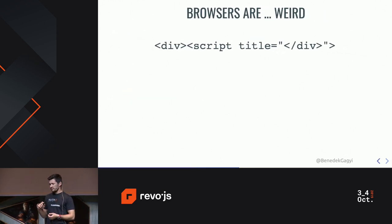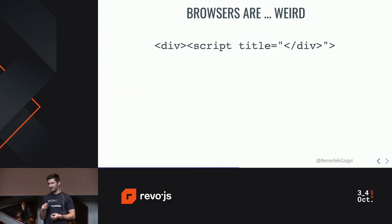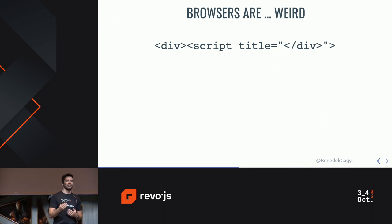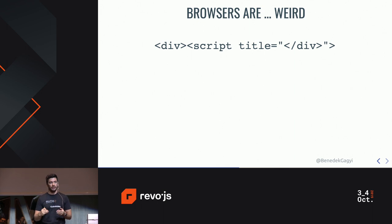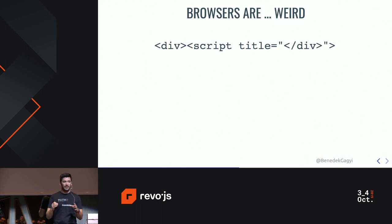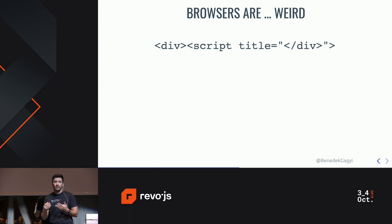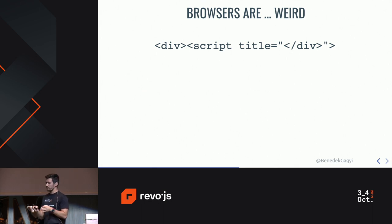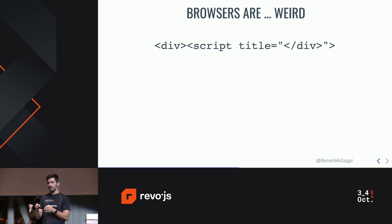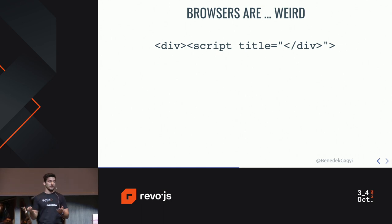The problem is that browsers are pretty weird — super weird. It's really hard to tell, if you just look at a piece of HTML code, what the browser will actually render. For example, we have some invalid HTML. Browsers will, even if you send them something invalid, try to figure out what you meant and come up with a solution. So if you have a div tag and inside it a script tag with an attribute called title, and inside that title as a string there's a closing div tag — what will happen?